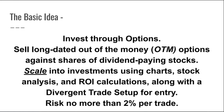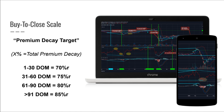Invest through options — sell long-dated, out-of-the-money options against shares of dividend-paying stocks. Scale into your investments using charts, stock analysis, and return on investment calculations, along with a divergent trade setup for entry. Risk no more than 2% per trade, and exit trades systematically with a buy-to-close scale.